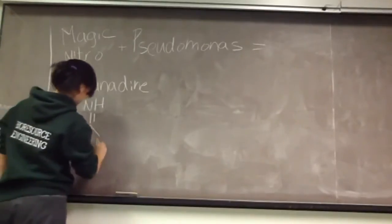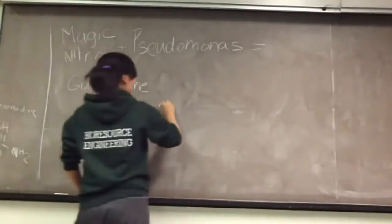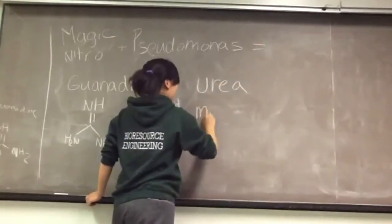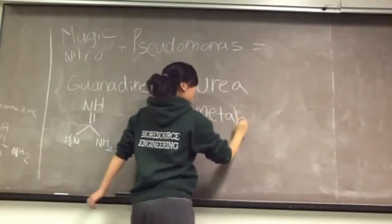However, the guanidine can be toxic. Luckily, it has a very short half-life and is not considered dangerous. Urea is naturally present in the soil and is not a concern.